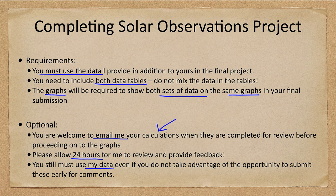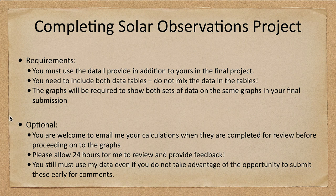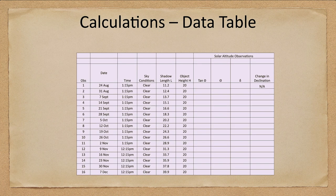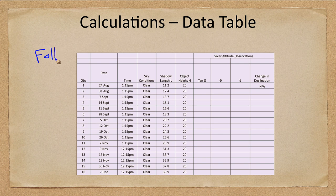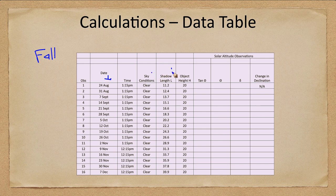Let's look at the data table here. You will see a data table similar to this. This is a fall semester data table, so if you are taking the class in winter, spring, or summer, you will see different dates and different measurements for the shadow length and object height.